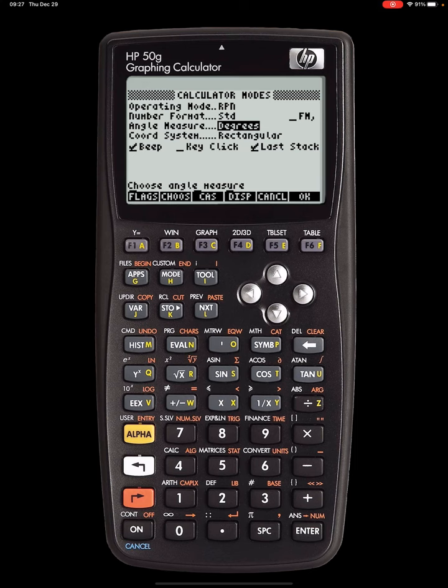See what I'm doing? I got no way to put an arrow on here to show you, but there's a line on the display screen that says flags, choose, cast, display, cancel, and OK. To activate those, you tap the F keys beneath them, F1, 2, 3, 4, 5, 6. Hopefully you can hear me. I've got recording the microphone on, but I don't know if it's picking it up or not. I won't know until I'm done.